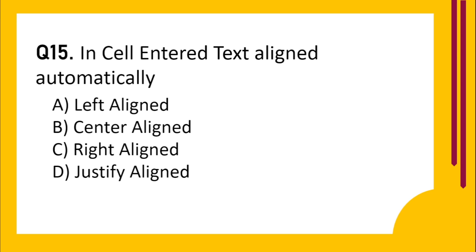Question number 15. In a cell, entered text aligns automatically. Option A: Left align. Option B: Center align. Option C: Right align. Option D: Justify align. The correct answer is A: Left align.